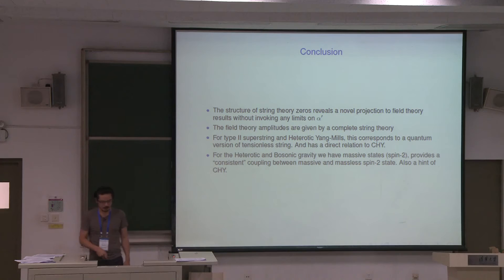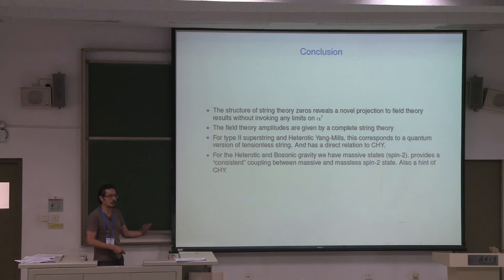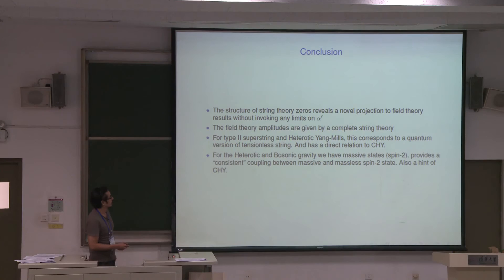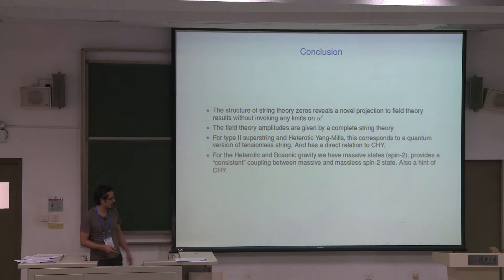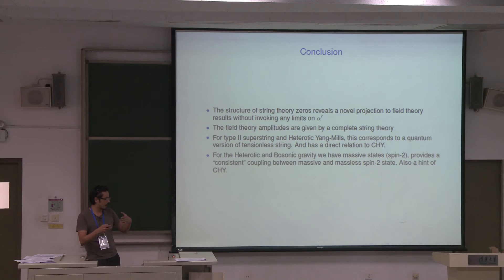In conclusion: in this talk I've discussed the structure of string theory and shown that the zeros reveal a way to project into field theory without doing anything with alpha prime — just switching the signature of the left versus right hand, converting into a chiral theory. Doing it this way, the field theory amplitude is still given by a complete string theory in the sense that you still have a world sheet. The reason it doesn't have the usual exponential softness suppression is that the opposite signs between left and right handedness cancel the exponential softness.